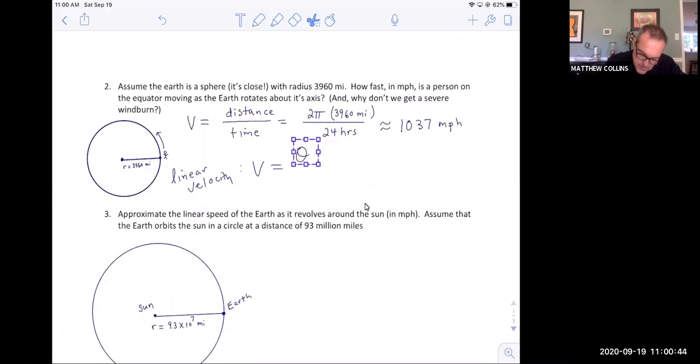We have 3960. Let me move this over here. We have 3960. That's the radius of the earth. We have 24 hours. That's a time unit. And that's my formula. Now, generally speaking, we usually rewrite the top as R times theta over T.